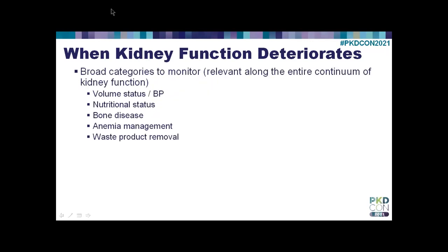As kidney function is deteriorating, we monitor a variety of things across the entire continuum of kidney function—from minor kidney dysfunction all the way to end-stage kidney disease. We monitor your volume status and blood pressure, your nutritional status, blood chemistries associated with bone disease, anemia caused by erythropoietin deficiency, and waste product removal by your kidneys, as well as after you start dialysis.